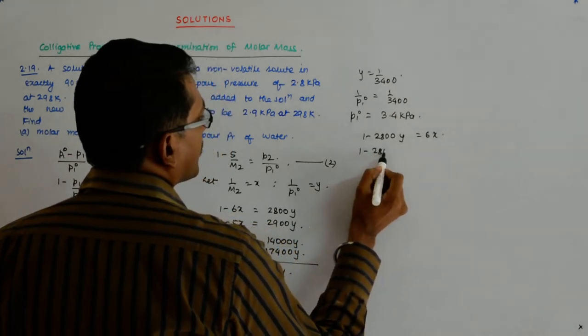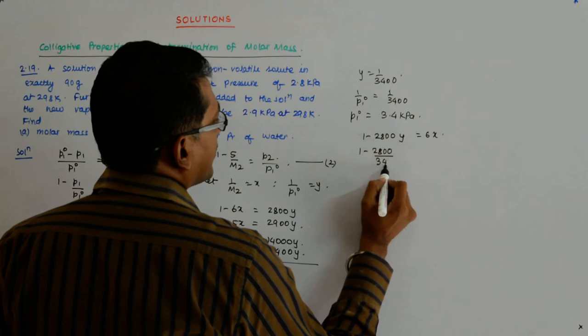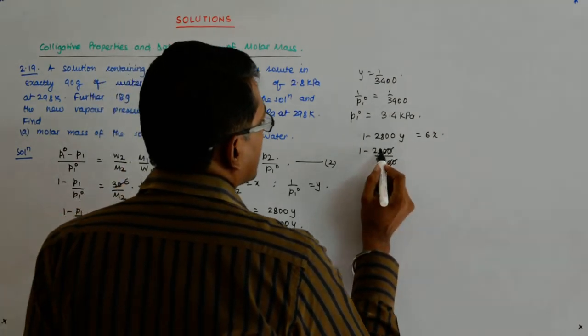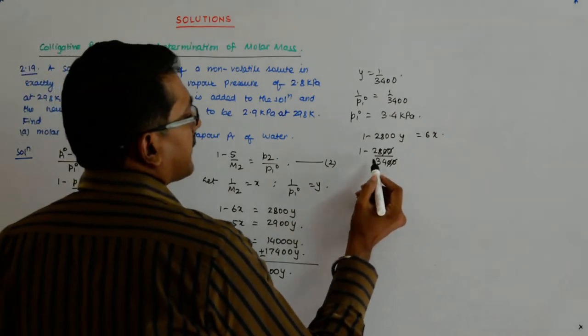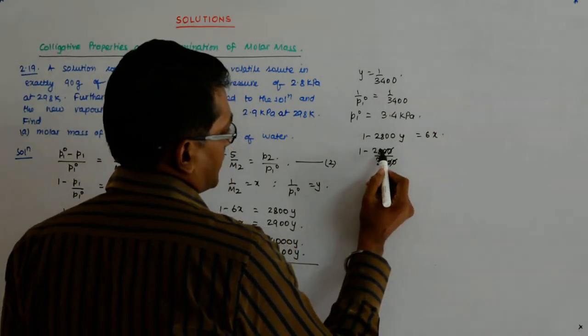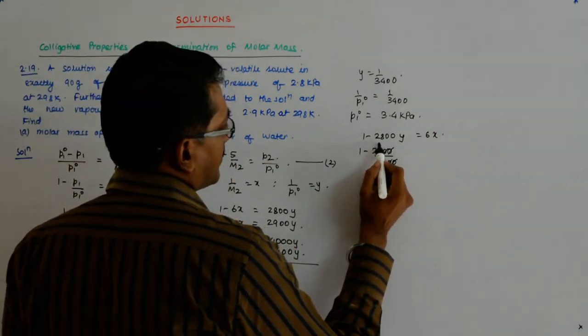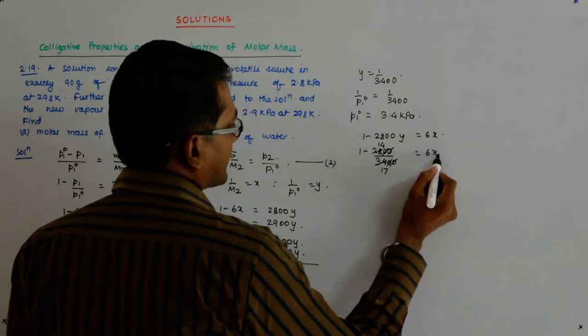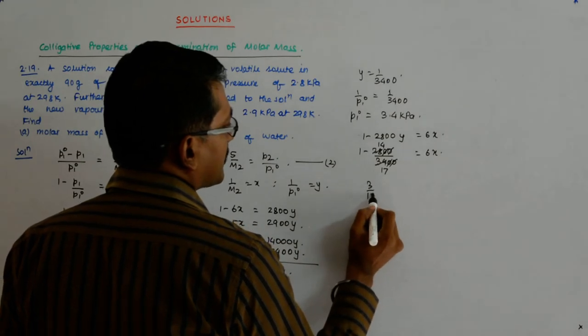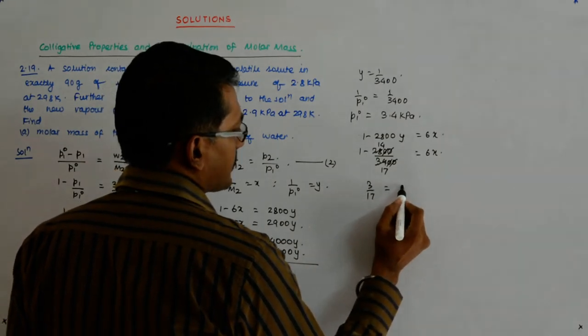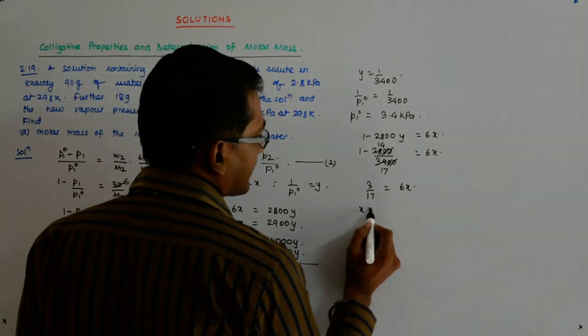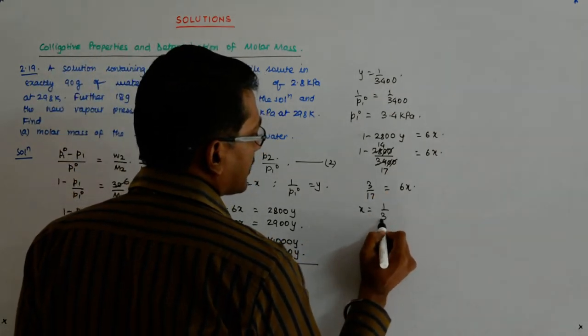So it is 1 by 2800 by 3400. Okay? So this is 14 and this is 17 is equal to 6x. So 3 upon 17 is equal to 6x. And you get x as 1 by 34.